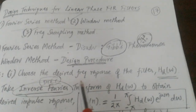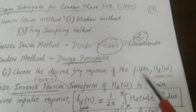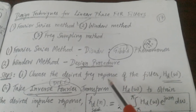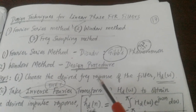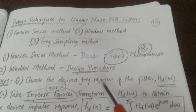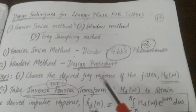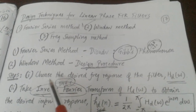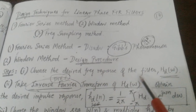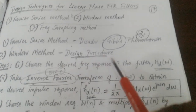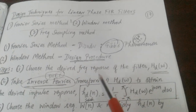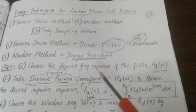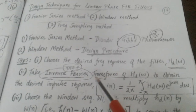The first step is to choose the desired frequency response of the filter. There are four basic types of filters: low pass, high pass, band pass, and band stop. When asked to design a filter, the first thing is to identify what type of filter it is from the given shape — whether it is low pass, high pass, band pass, or band stop.